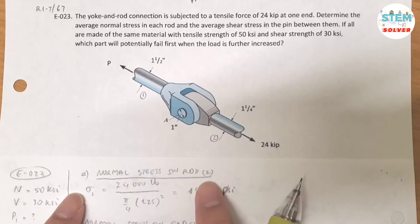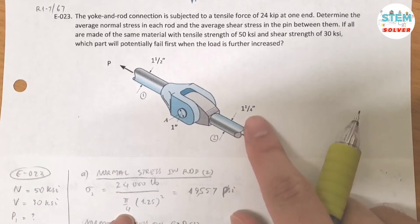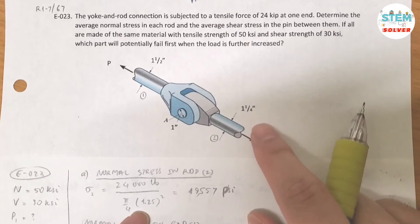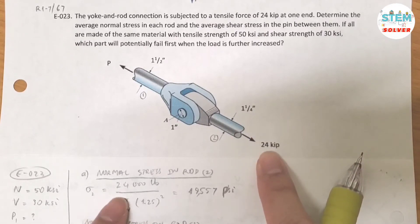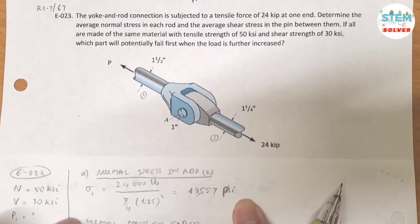So for part a, the normal stress in rod 2 is equal to normal force divided by the area. What is the area of rod 2? It's pi over 4 times the diameter squared, so you have pi over 4 times 1.25 squared. Okay, and what is the force? The force is 24 kip which is 24,000 pounds. And you burn this into calculator, it gives you 19,557 psi. Okay, that is for the normal stress in rod 2.